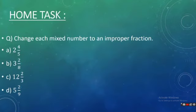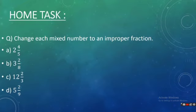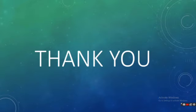Now your home task: change each mixed number to an improper fraction. Part A is 2 whole 4 by 5, Part B is 3 whole 2 by 8, Part C is 12 whole 2 by 3, and Part D is 5 whole 2 by 9. Try to attempt these questions by taking help from the examples, then submit this home task in school for assessment marks. It's enough for today — wish you best of luck, thank you.